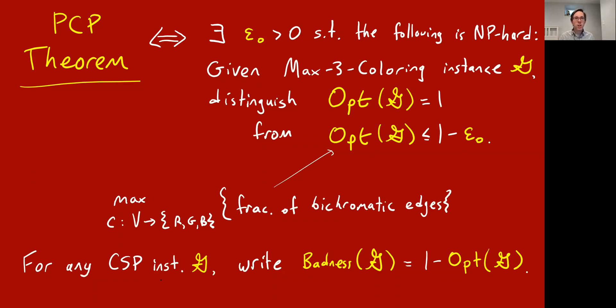This opt is the maximum over all three-colorings of the vertices of the fraction of bichromatic edges. But it's going to be convenient for us to look at the difference of this quantity from 1. I'm going to introduce some non-standard notation here for any CSP at all, script G, not necessarily three-coloring, but think of three-coloring for now. I'm going to write badness of G for 1 minus the opt. This is sort of like the least error you can incur, or least loss you can incur by an assignment.